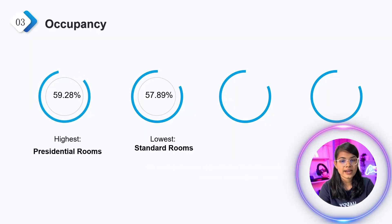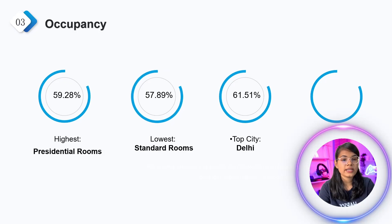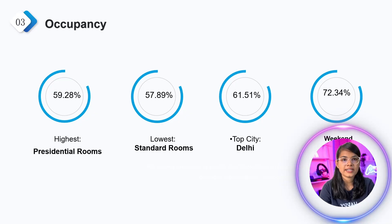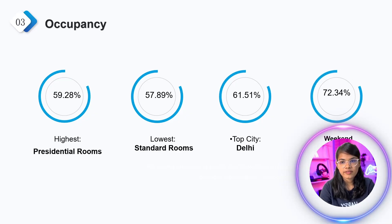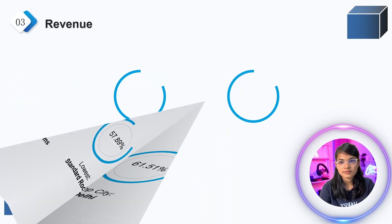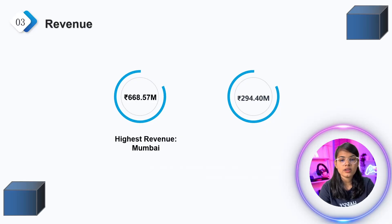After analyzing all the data: the Presidential room is the most occupied at 59.28%, the least booked is the Standard room at 57.89%, the top city is Delhi with 61.15% occupancy. Weekends are busier than weekdays. In terms of revenue, Mumbai earns the most while Delhi earns the least.